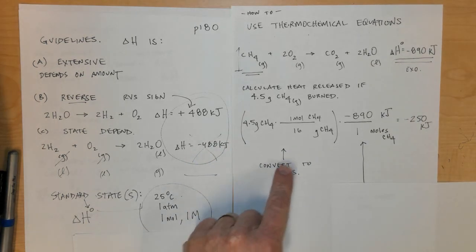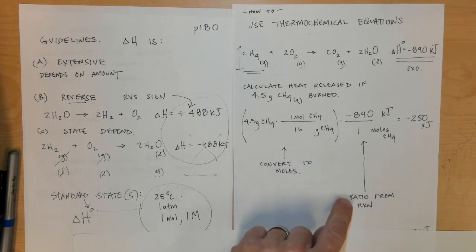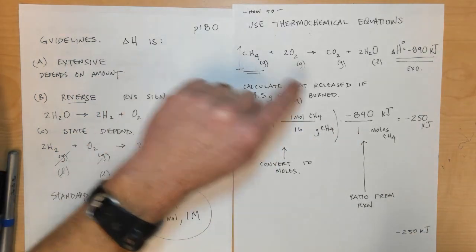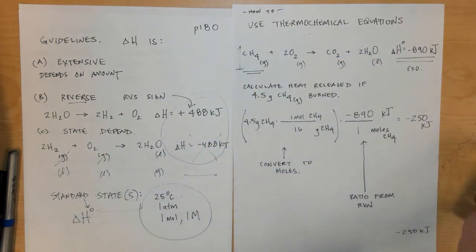Then step number two, after I converted to moles, I took the ratio from the balanced thermochemical equation. One from the coefficient, negative 890 from delta H.